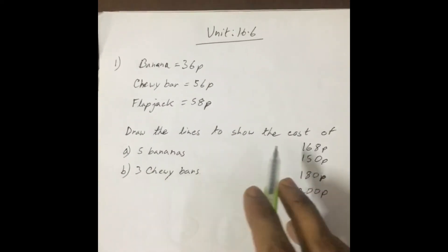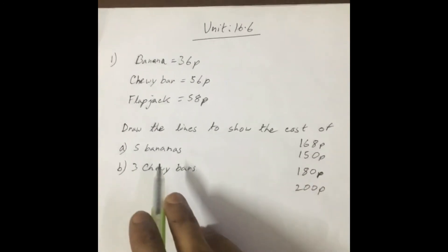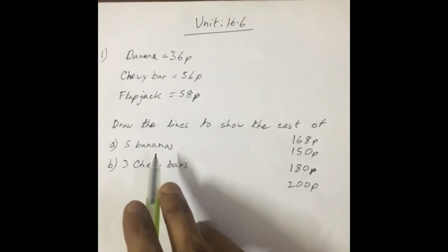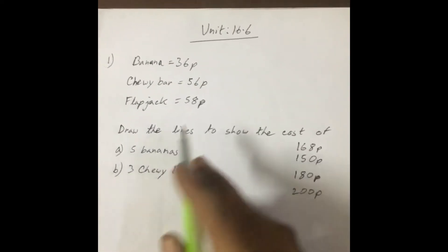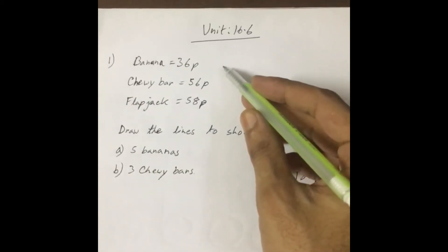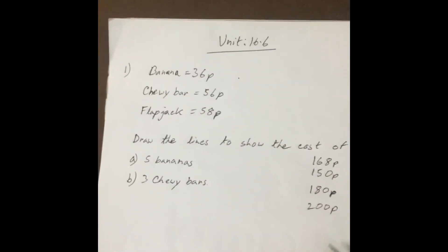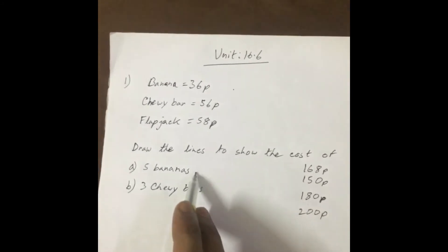Draw the lines to show the cost of 5 bananas. So 5 bananas is 5 into 36. The answer will be 180. So here is 180, we just link the line.